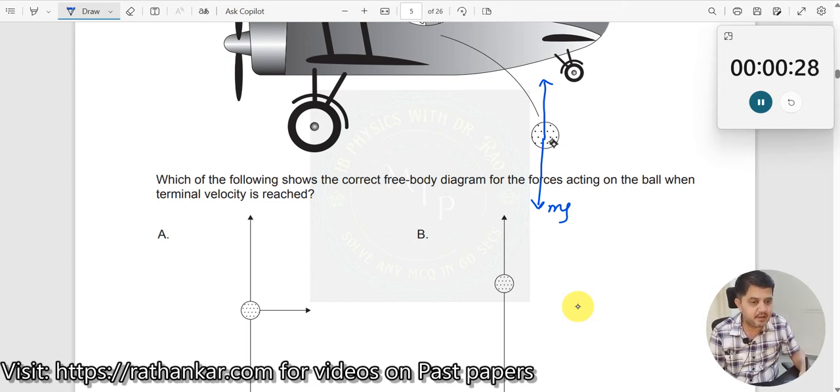Such that at any point when terminal velocity is attained, the drag force and the Mg force should become equal. Let us see which of them is possible.